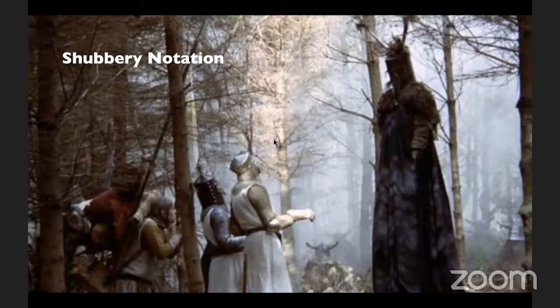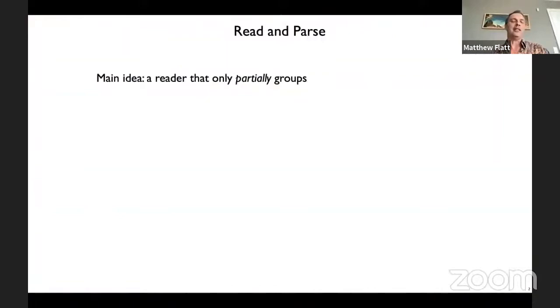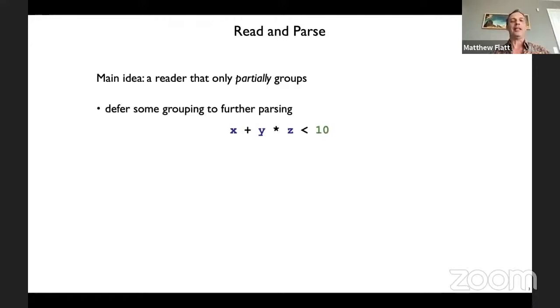Shrubbery notation started out as a different thing. The main idea — in contrast to what Jay said, and Jay foreshadowed this — is the idea of a reader that only partially groups. So if you write something like x plus y times z minus 10, the job of grouping and deciding on precedence wouldn't be the job of the reader in s-expression world, but would instead be deferred to a parser.